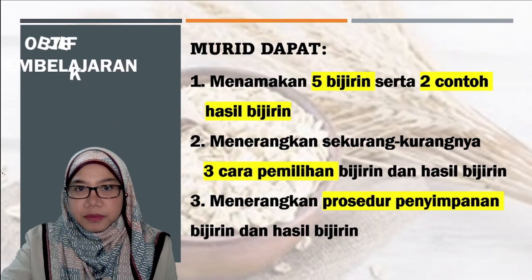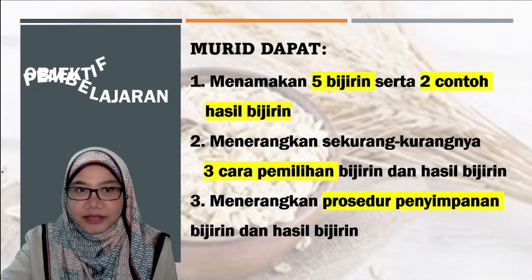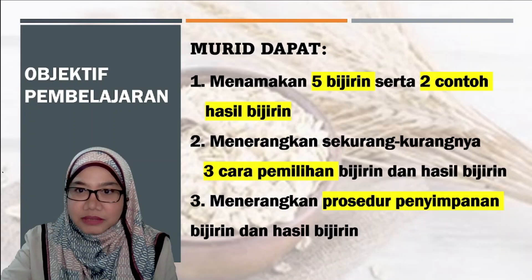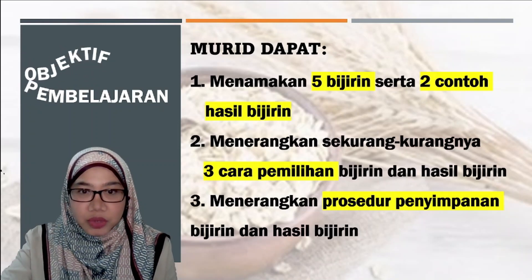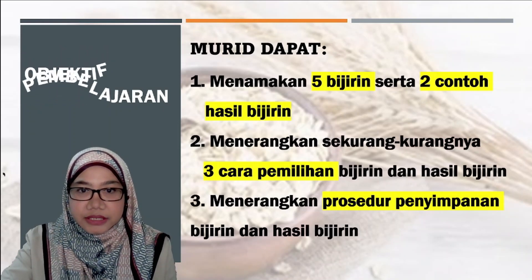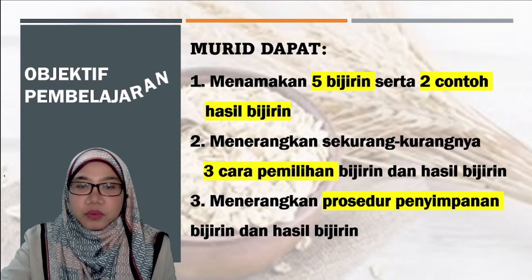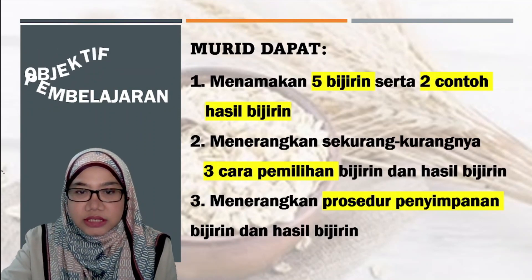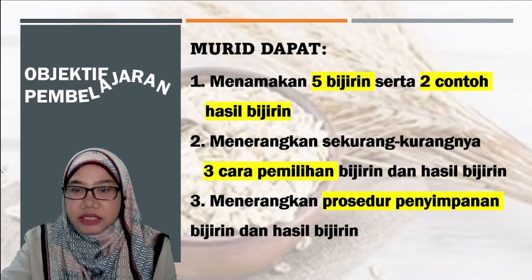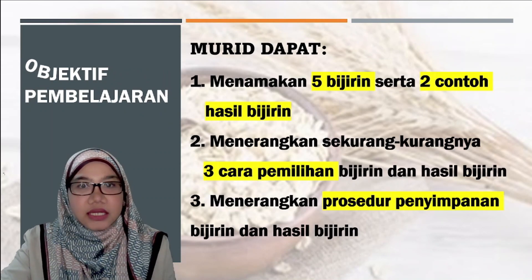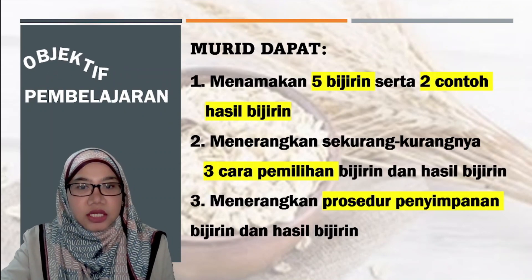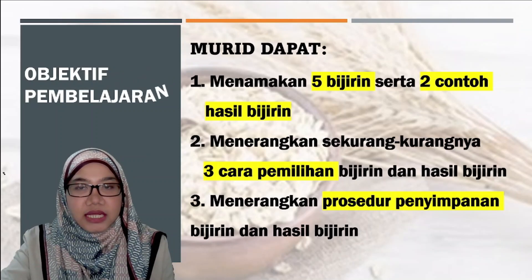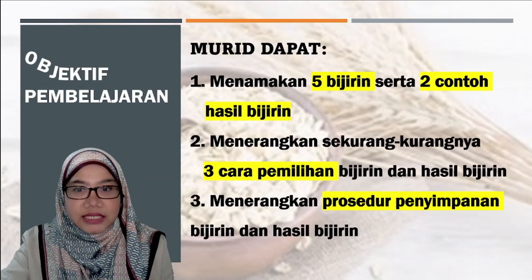Objektif pembelajaran kita pada hari ini: pertama, murid dapat menamakan 5 bijirin serta 2 contoh hasil bijirin. Kedua, murid dapat menerangkan sekurang-kurangnya 3 cara pemilihan bijirin dan hasil bijirin. Ketiga, murid dapat menerangkan prosedur penyimpanan bijirin dan hasil bijirin.